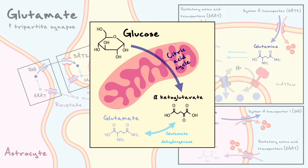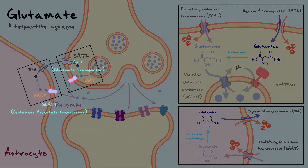As a side note, glutamate can also be synthesized at the presynaptic terminal from glucose. As glucose gets oxidized in the mitochondria through the citric acid cycle, it eventually forms alpha-ketoglutarate, which can be converted into glutamate by the enzyme glutamate dehydrogenase. Also worth noting, the excitatory amino acid transporters or EAATs are also named GLAST and GLT, which stand for glutamate aspartate transporter and glutamate transporter.